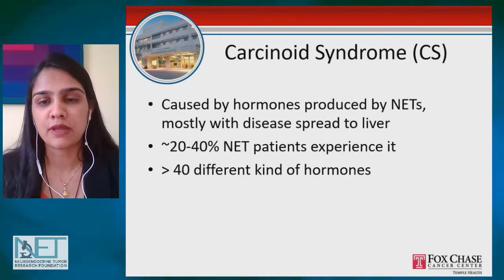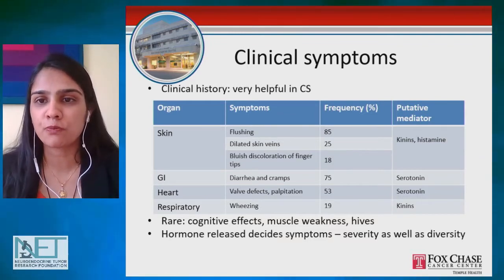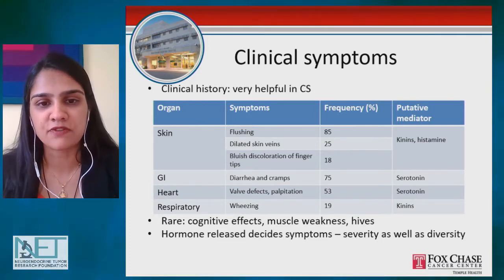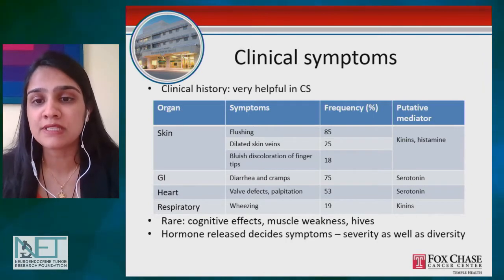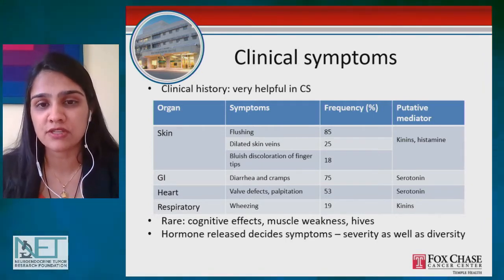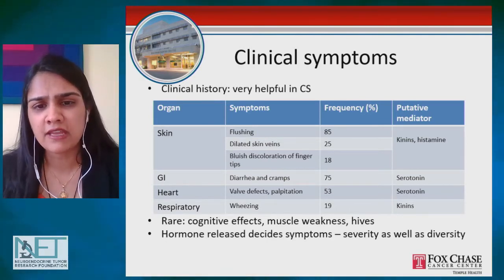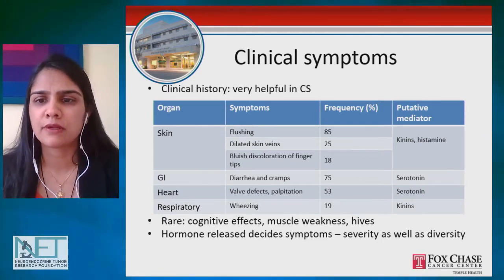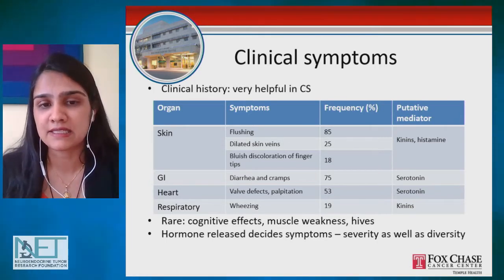Looking at the clinical symptoms associated with carcinoid syndrome, you see many different types of body systems are affected. It can cause skin symptoms like flushing, which is probably the most common symptom associated with carcinoid in about 85% of patients. There are also some less common skin manifestations like dilated skin veins and bluish discoloration of fingertips. The most likely hormones that mediate these skin symptoms are kinins and histamines.